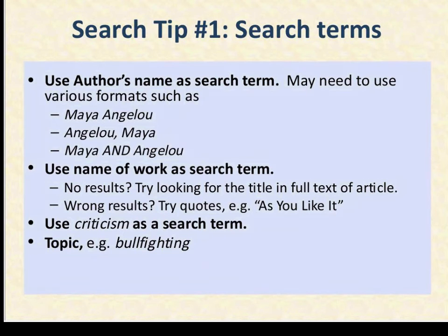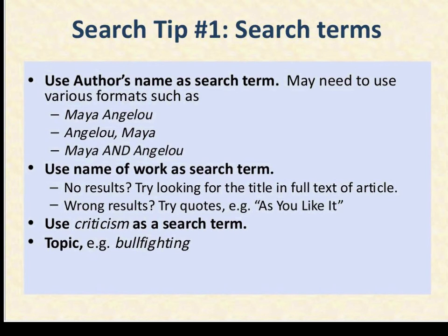You could also try the name of the work as a search term. If your title is more than a couple of words, you can put the title in quotes. Something like 'As You Like It' — all those words are relatively common, but using quotes keeps it together as a phrase in that order. That's a very helpful tip for literary research. Also, adding 'criticism' as a search term is useful — if you use the author's name and add 'criticism,' you're going to find articles that deal with critiquing your primary source.